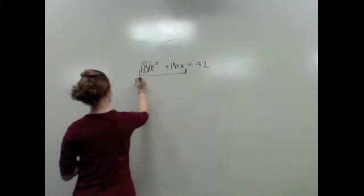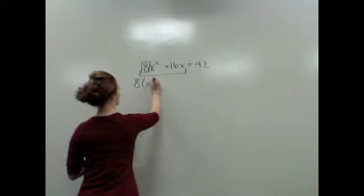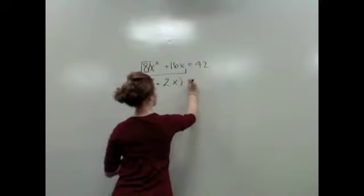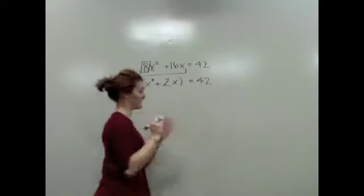So when I factor out the 8, I'm left with x² + 2x, well 8 goes into 16 two times, plus 2x equals 42. Nothing changed.